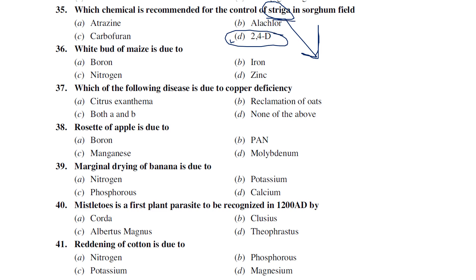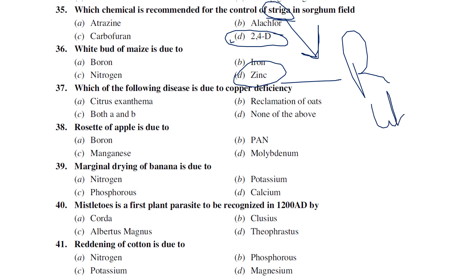White bud of maize is due to zinc deficiency. So three zinc deficiency diseases are: rice Khaira disease, citrus foliar sclerosis, and white bud of maize. For copper deficiency: citrus exanthema and reclamation disease of oats are both caused by copper deficiency.